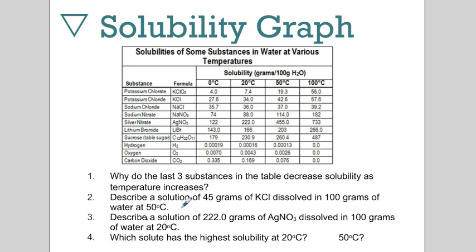Describe a solution of 222 grams of AgNO3 dissolved in 100 grams of water at 20 Celsius. Silver nitrate - at 20 Celsius you should be able to dissolve about 222.0 grams per 100 mils of water. That would be considered saturated.